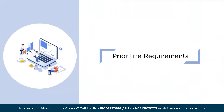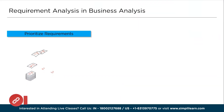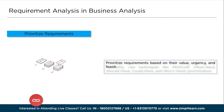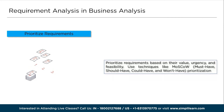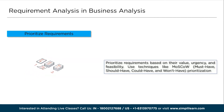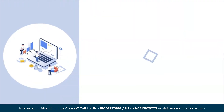Step 9: Prioritize Requirements. Not all requirements are of equal importance. Prioritize requirements based on their value, urgency, and feasibility. Use techniques such as MoSCoW — Must Have, Should Have, Could Have, and Won't Have — or the Kano model to categorize requirements based on their impact on project success and stakeholder satisfaction. This enables efficient resource allocation and ensures the most critical requirements are addressed first.